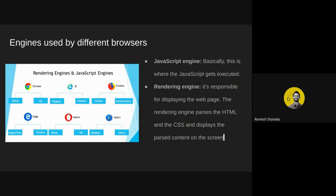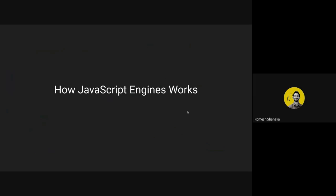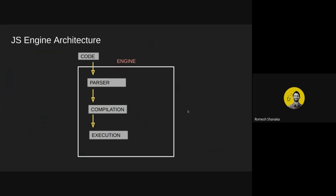These are the different JavaScript engines used by different browsers. The most well-known ones are Chrome's V8 engine and Firefox's SpiderMonkey. In JavaScript architecture, there are three main things happening: the code we write goes to the parser, then gets compiled, and then executed.